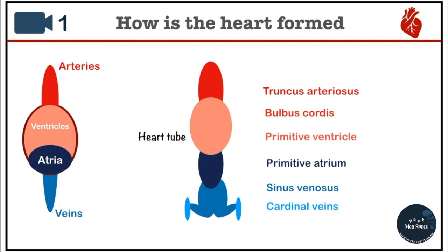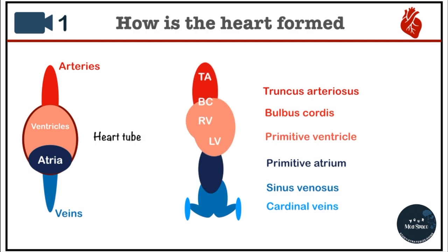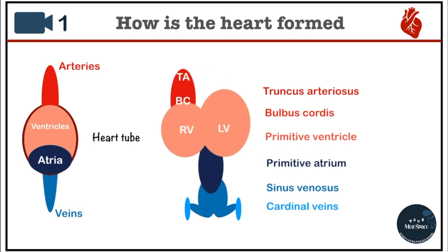Soon each part will start having a polarity, which means it'll know if it's going to form the right side or the left side. The top part of the pink circle is going to be the right ventricle and the bottom part is going to be the left ventricle. We have bulbous cordis present between the ventricles and the truncus arteriosus. For this heart tube to look like a proper heart, it undergoes some twisting. The first twist takes place in this direction, and when the tube twists like this, all these structures move accordingly, so by the end of it all the structures will look something like this.